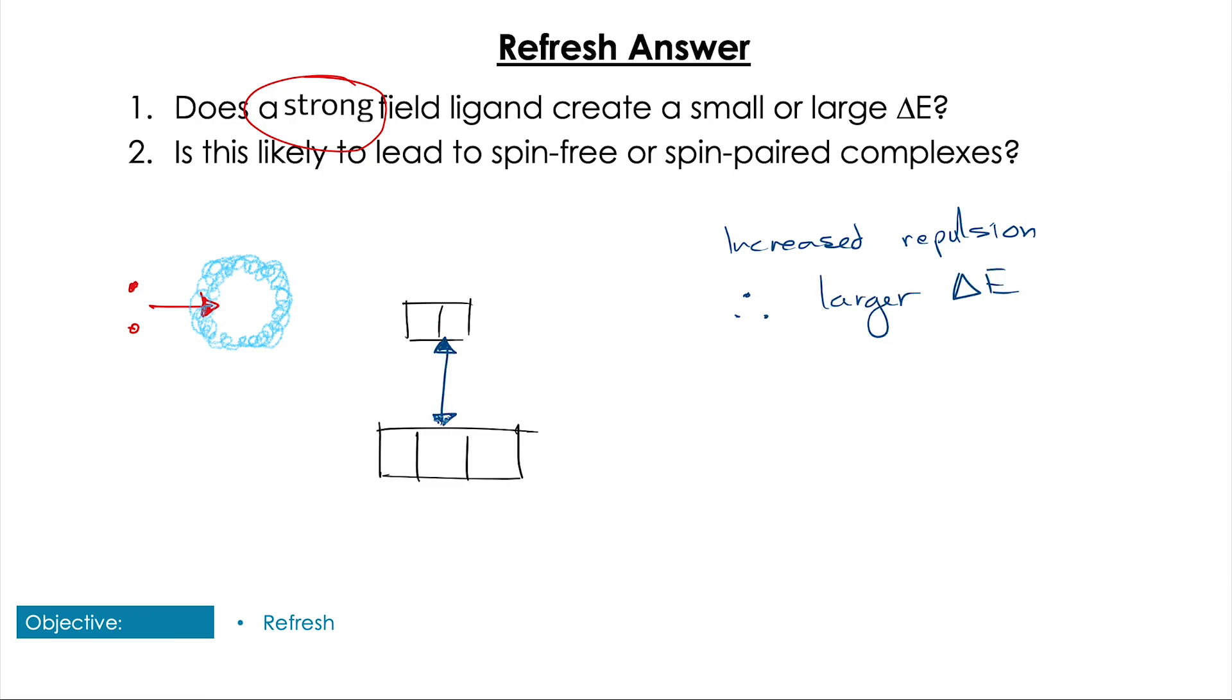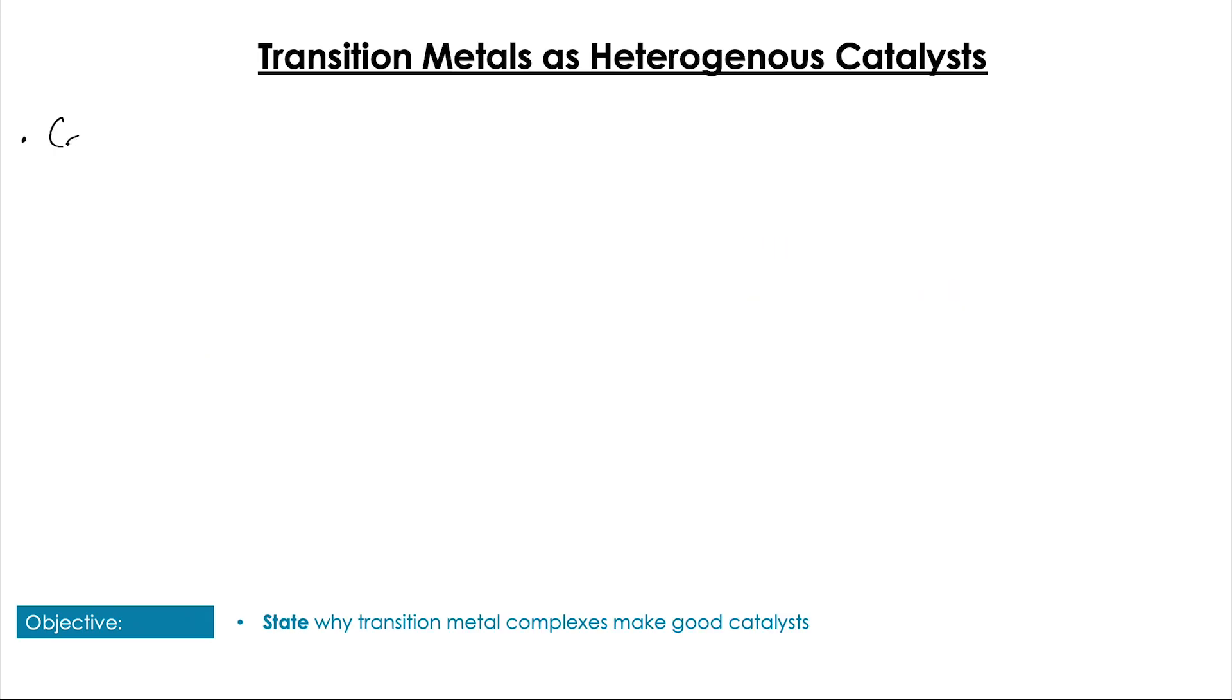An increased repulsion means we're also going to increase the difference in energy between the low and high energy t2g and eg orbitals. That means that if we compare the relative value of delta E with the pairing energy, delta E is likely to be larger than P, and so we're likely to have spin-paired complexes.